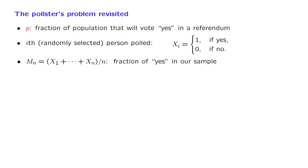We now revisit the polling problem that we have studied earlier. When we first looked at that problem, we used the Chebyshev inequality to obtain certain bounds and numerical results. What we want to do now is instead to use a central limit theorem type approximation, which we hope will be more accurate and more informative.